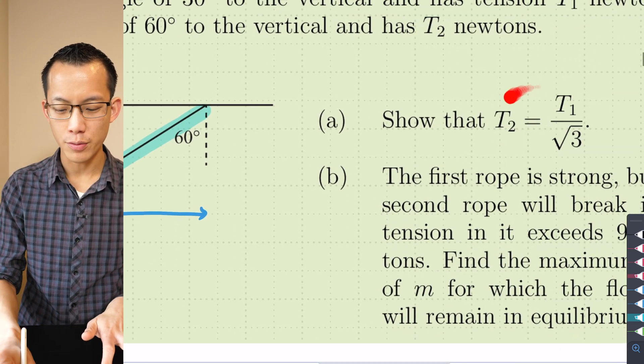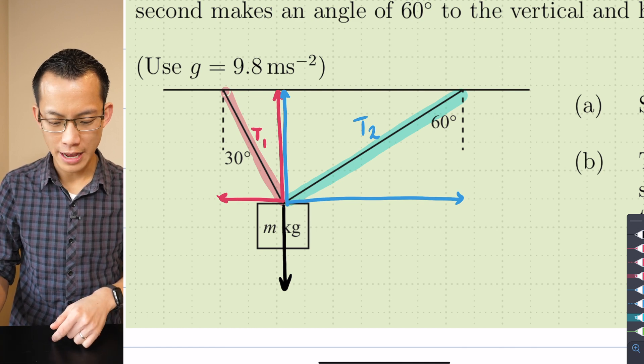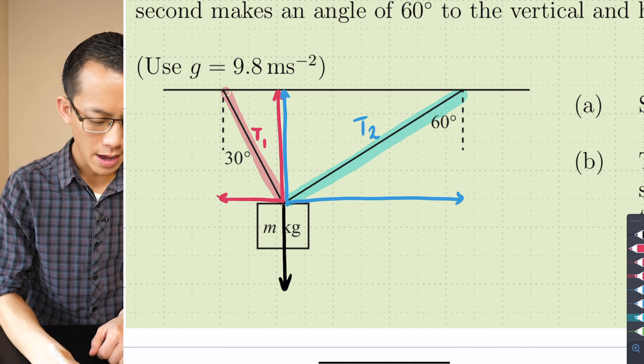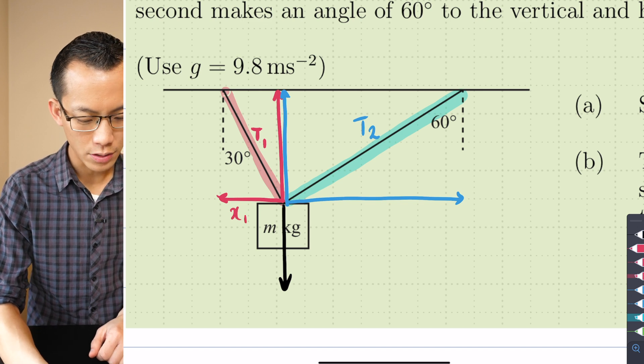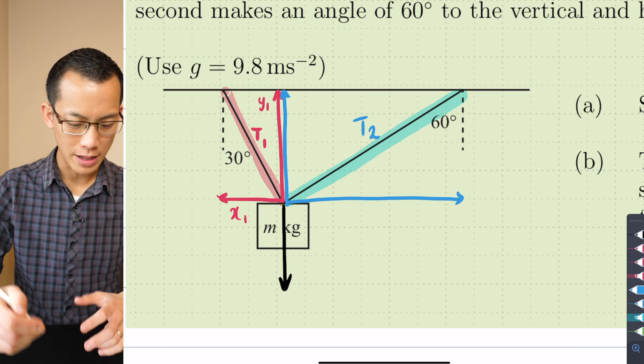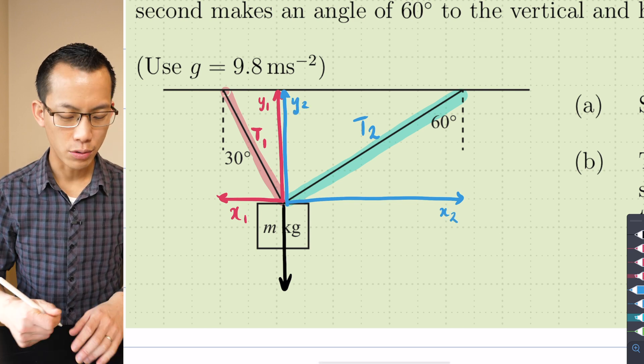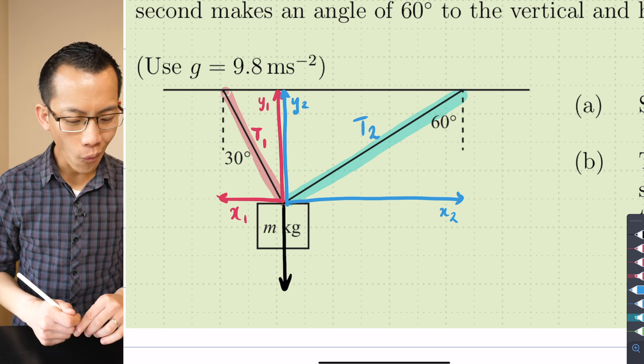Therefore I just need to find an expression for this and an expression for this, show that they're equal, and I should be able to get this relationship out here. To put some helpful names on things I'm going to call this, let's start with the first rope, I'm going to call this x1 and y1, x being horizontal y being vertical. Just while I'm at it I'll do the same for the other two so I'll have this as x2 and I'll call the other one y2.